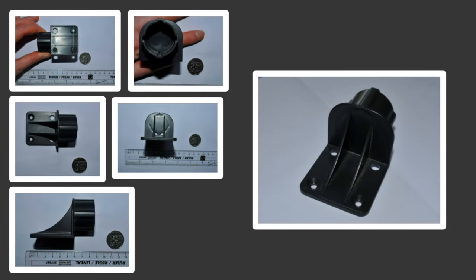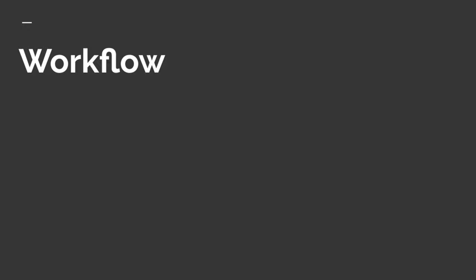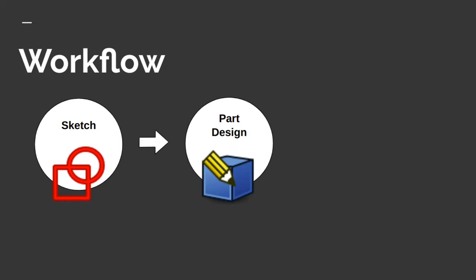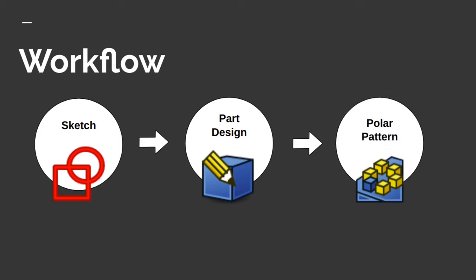We're going to create a model from a number of images, which will be used as a tracing reference. In this video we're going to be looking at the workflow through the part design. We'll create a sketch of one of the features using the part design and the image workbench, and we're going to be looking at a repeating feature — a feature that saves time by repeating around a circular path, known as a polar pattern.